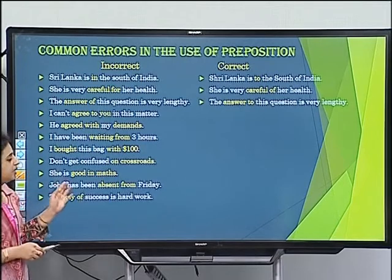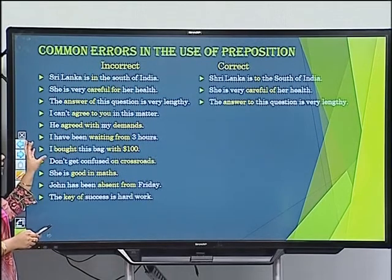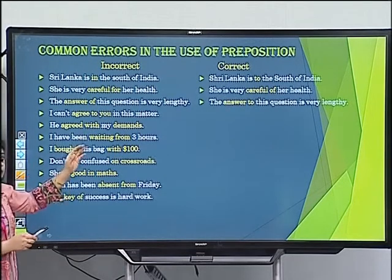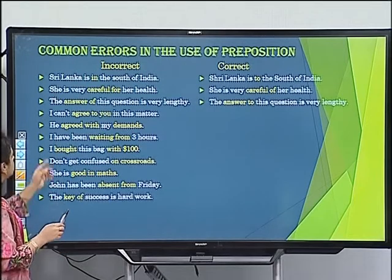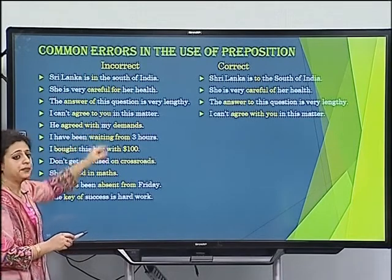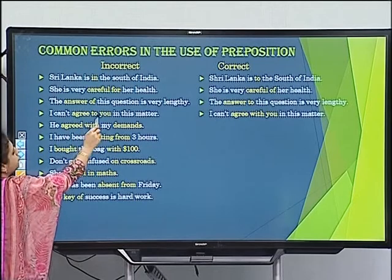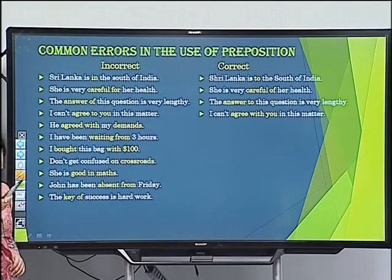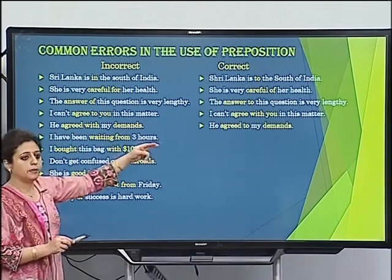Why? 'Agree to' is used when talking about a matter or opinion. 'Agree with' is used when talking about a person. So 'I cannot agree with you in this matter' is correct — because 'you' is a human being. And 'he agreed to my demands' is correct — because demands represent opinions or matters.